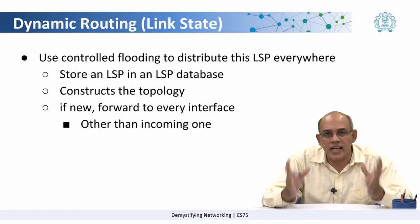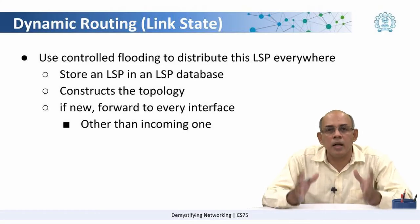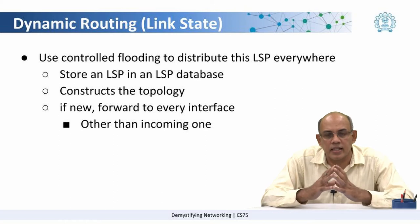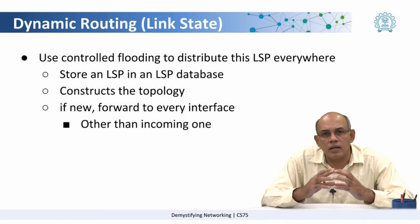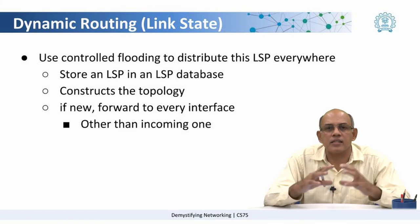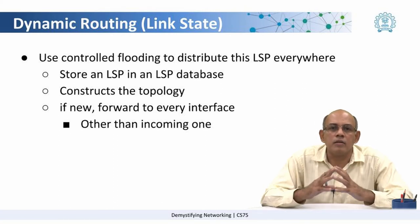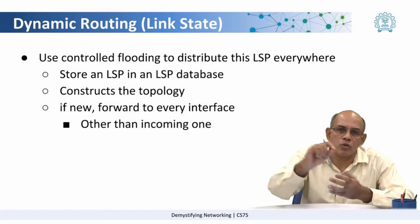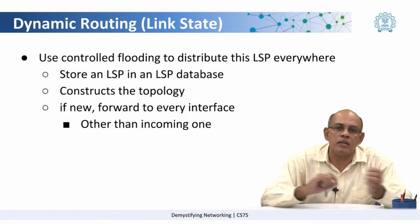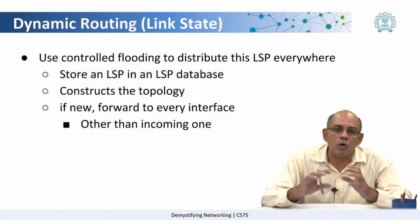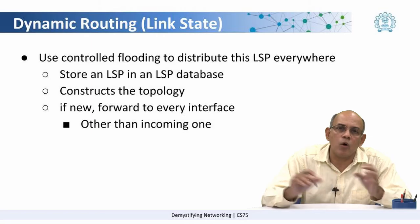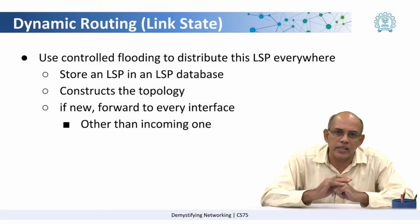Once a router has a number of such link state packets in its database, it constructs the topology of the network, because it now knows which other routers exist in the network and how they are connected to each other.